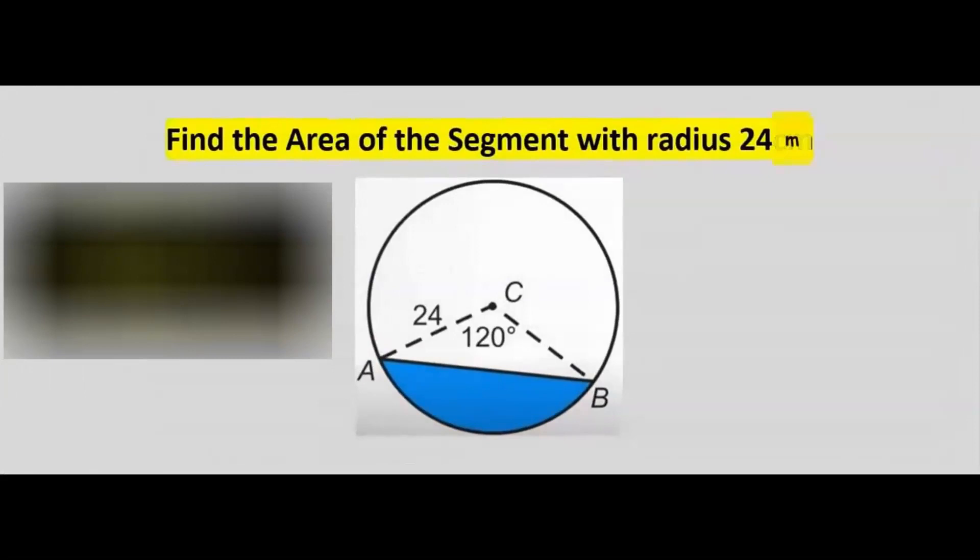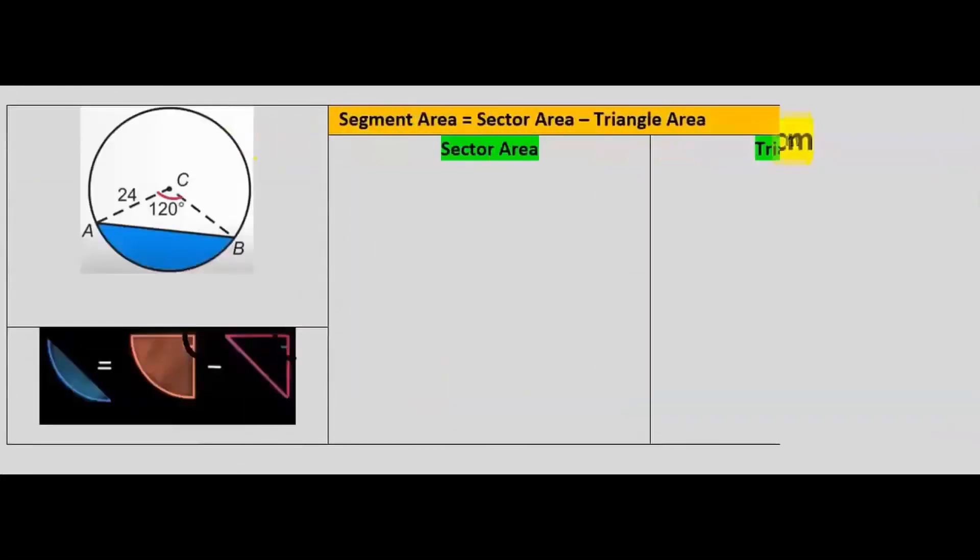Find the area of the segment with radius 25. We want to find the area of this segment, which is enclosed in a sector. Step number one, consider the angle at the center.